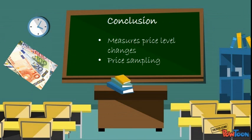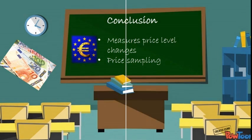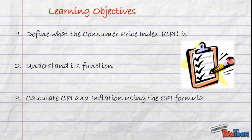So therefore, to summarize, what is the Consumer Price Index? It measures change in the price level of a market basket of consumer goods and services purchased by households. The Consumer Price Index is a statistical estimate constructed using the price of a sample of representative items whose prices are collected periodically each month.